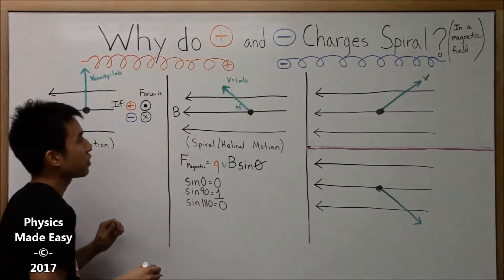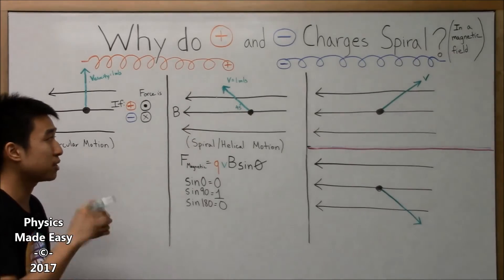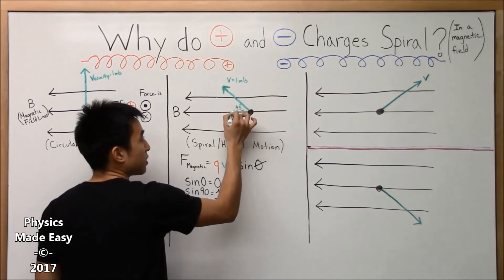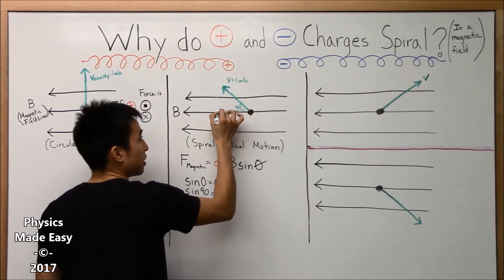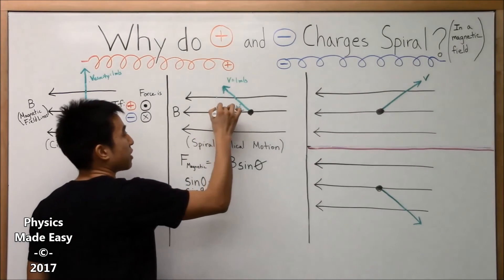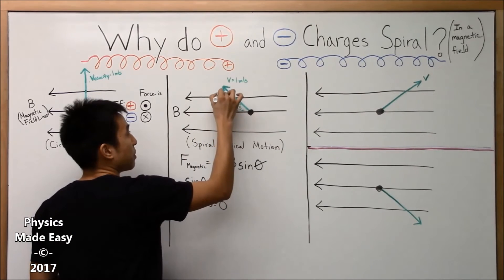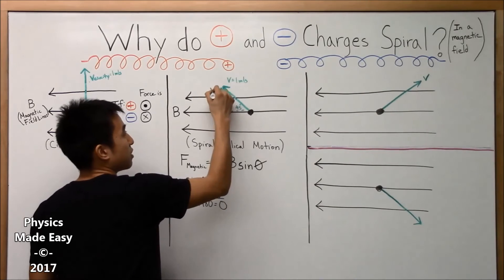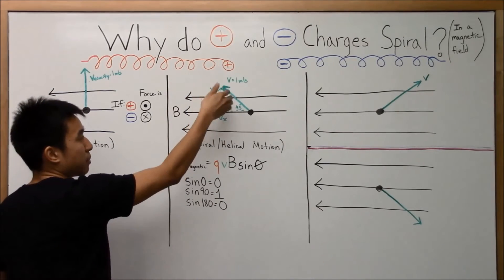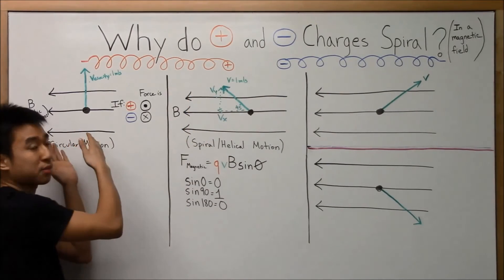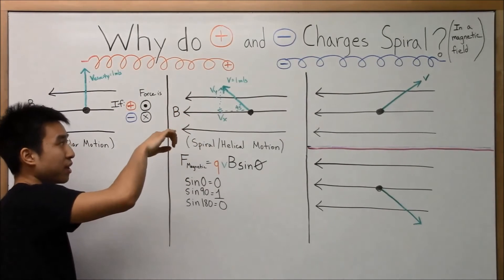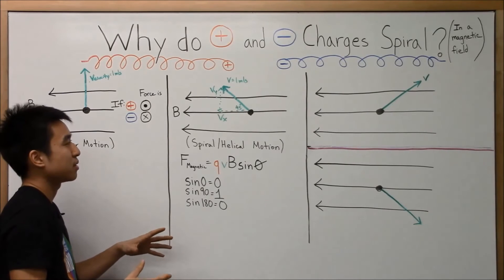Always, always, always going to be a component that's parallel to the magnetic field, and then a velocity component that's perpendicular to the magnetic field. So, we'll call this Vy and Vx. And the significance is that Vy, the y component, is going to be affected just the same way as before because it's going up. So, the y component is going to be affected by the magnetic force. Okay.